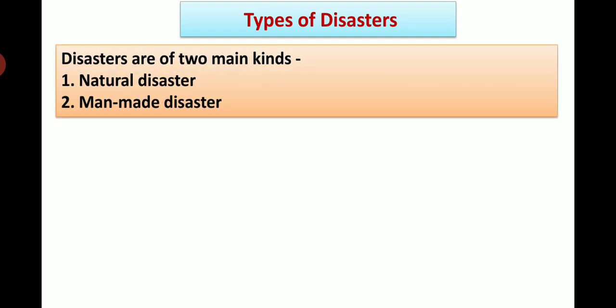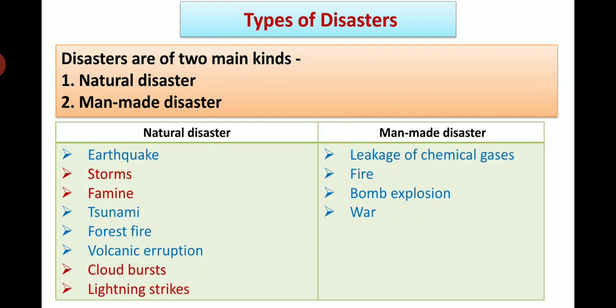Types of disasters: Disasters are of two main kinds, natural disaster and man-made disaster. Examples of natural disasters are earthquake, storms, famine, tsunami, forest fire, volcanic eruption, cloudbursts, and lightning strikes. Examples of man-made disasters are leakage of chemical gas, fire, bomb explosion, war, and accidents.